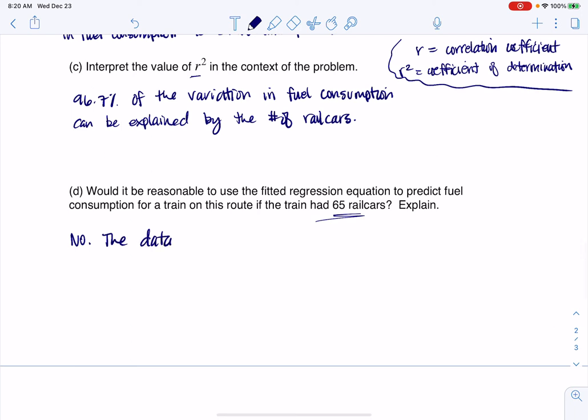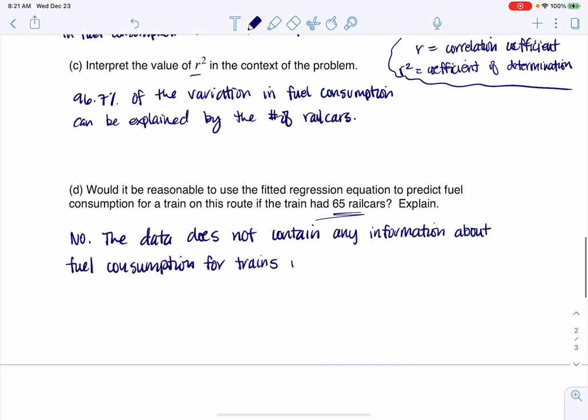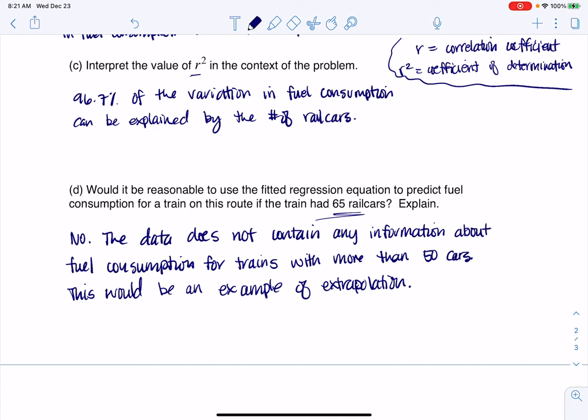All right, the data doesn't contain information about fuel consumption for any trains longer than 50 cars, right? And so I would say that. The data does not contain any information about fuel consumption for trains with more than 50 cars. This would be an example of extrapolation. All right. And that's how I would leave that. All right, so there, I'm going to scroll back. Actually, I'll just leave it here, but that is the end of bonus deep dive number two. Thanks.